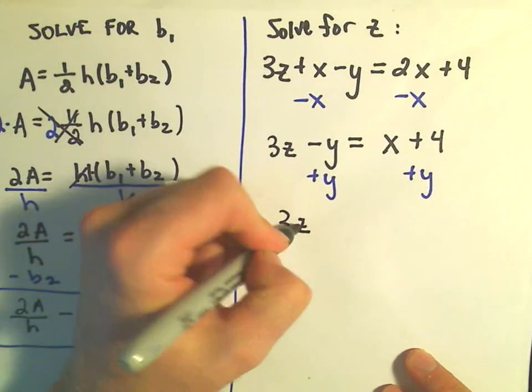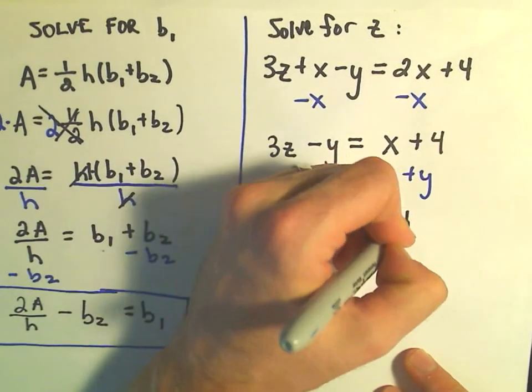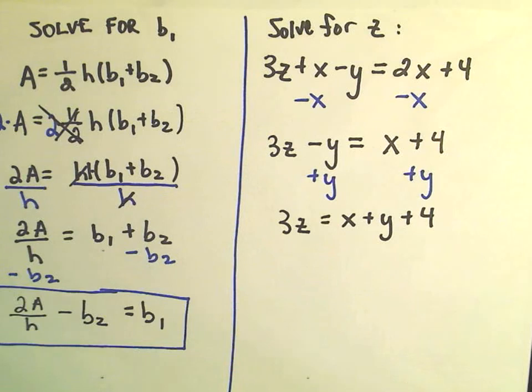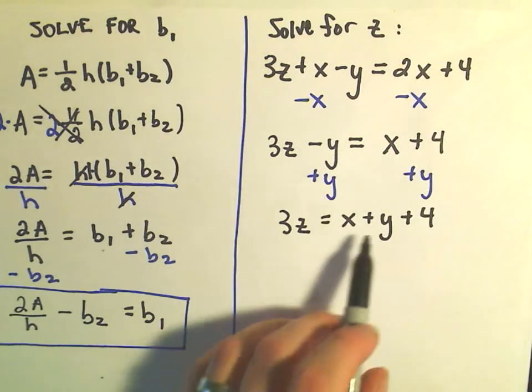So on the left side, we have 3z equals x plus y plus 4. Typically, I like to stick my variables first, so I just kind of arbitrarily put the y after the x.